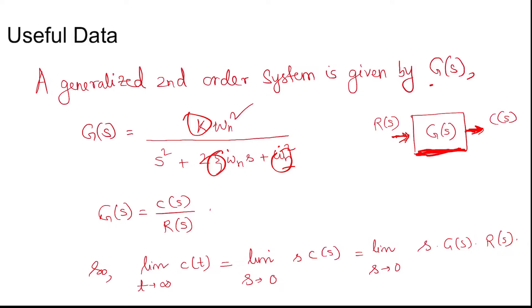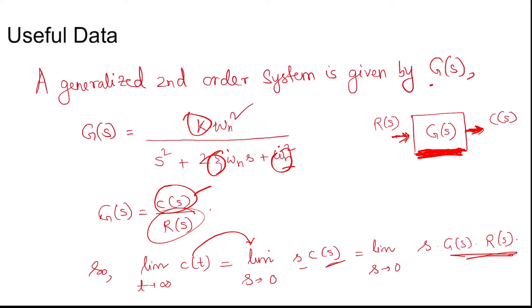For a transfer function G(s), the input is R(s) and the output is C(s), so G(s) = C(s)/R(s). The final value of the output C(s) for a given input R(s) can be written as the limit as t tends to infinity of c(t), which in the Laplace domain is written as the limit as s tends to 0 of s·C(s). Since C(s) = G(s)·R(s), the final value is the limit s→0 of s·G(s)·R(s).